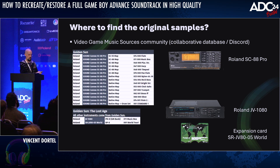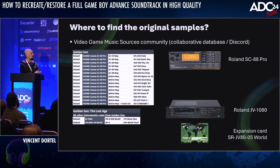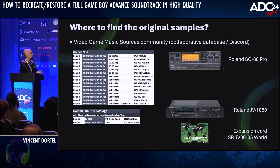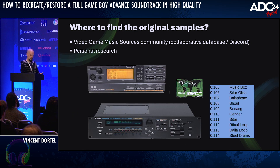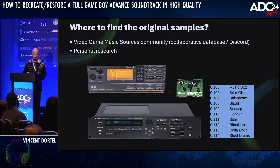For Golden Sun 2, the database was incomplete, but it said that the composer also used a Roland JV-1080 and a specific expansion card. Most of the samples had not been identified yet, but it was something to start the research. I managed to get my hands on the device. I simply explored the presets one by one by pushing the buttons, and that's how I found the Sitar, Bonang, Gender, Balafon, and Steel Drums from the second game. Nowadays you can also find VST versions of the devices, so it's even easier.